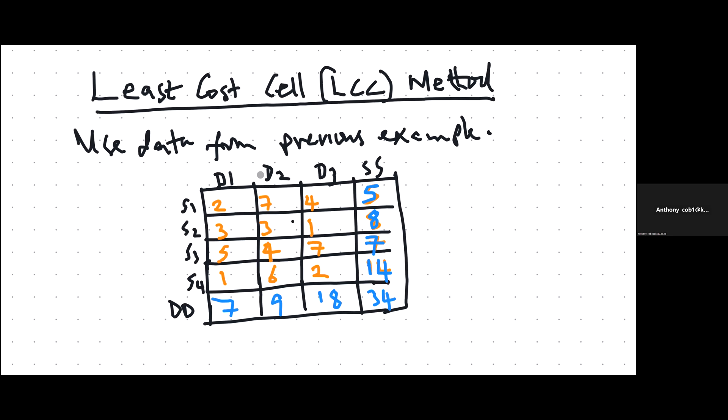In the first method, we are using the northwest corner cell as the priority cell in the allocation. Now in this LCC method, we use the least cost cell. The cell with the least cost as the priority in the allocation. If there is a tie, you break the tie randomly.